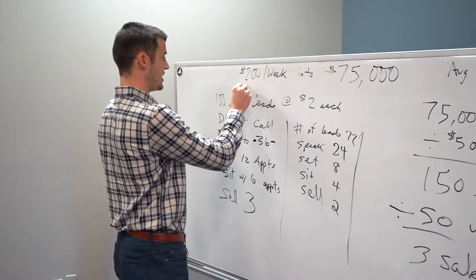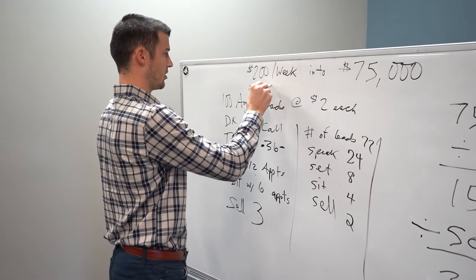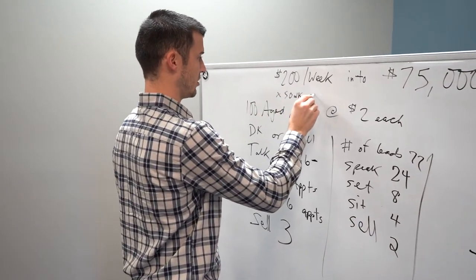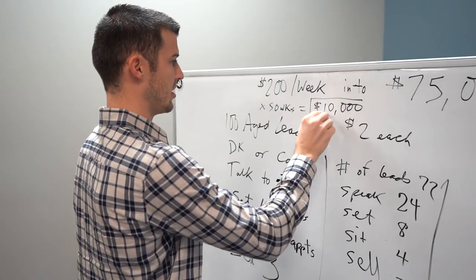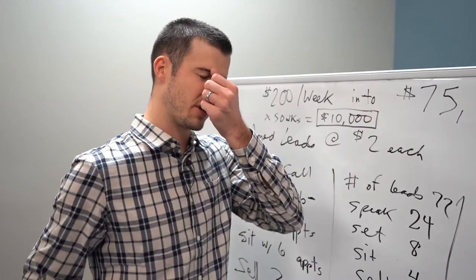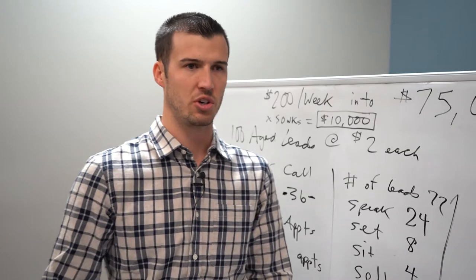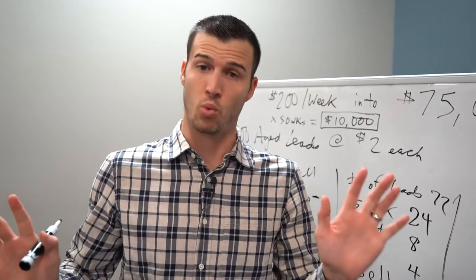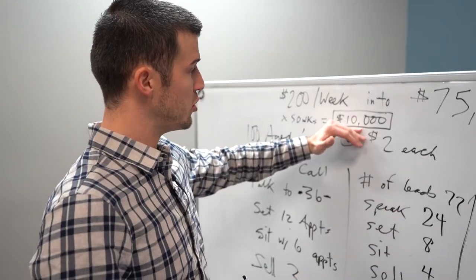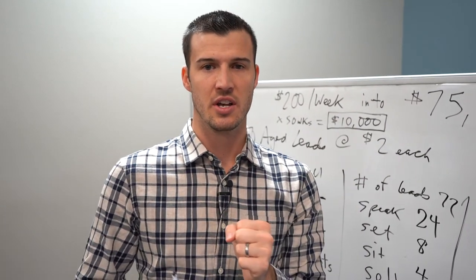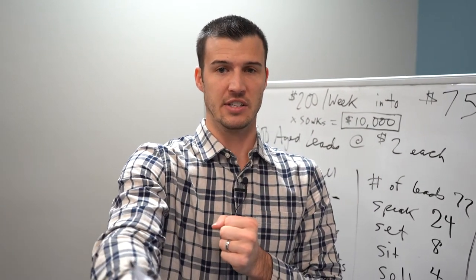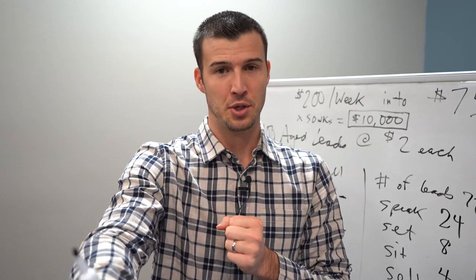Now over the course of 50 weeks, that's $10,000. Sounds like a lot. Most people in the life insurance business are getting a four, five, six times return on average, sometimes better, sometimes worse. So if you can take 10 grand, if I said hey, give me $10,000, I'm going to give you $75,000, I would do it too.